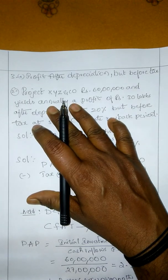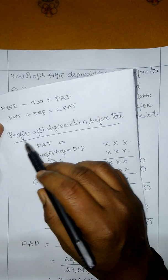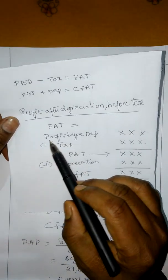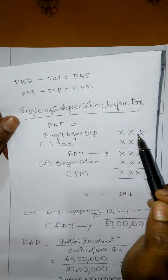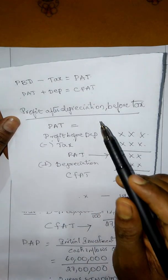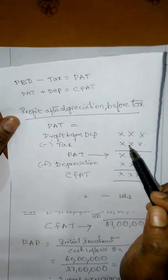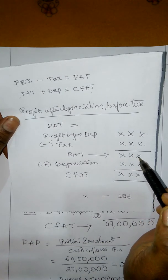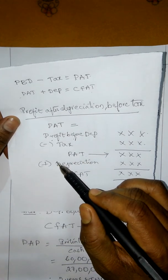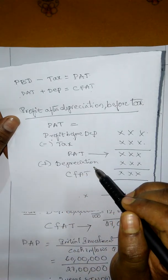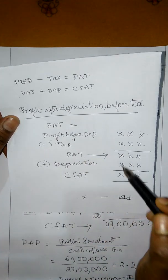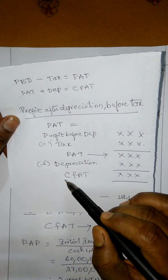Before we start, we will choose a formula. Profit after depreciation before tax — we will calculate. Profit before depreciation, before depreciation amount, then deduct tax. 50% depreciation, 20% tax — deduct the amount. Profit after taxes amount. Then add depreciation. Cost of project, profit after tax, add the 50% tax amount. Cash inflow.